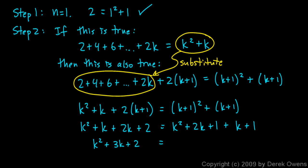And over on the right, I have a k squared. And combining like terms, there's a 2k and a k. That's a plus 3k. And my 1 and 1 give me a 2.